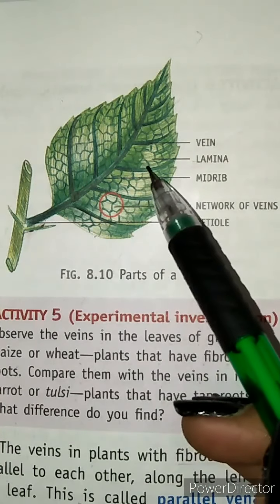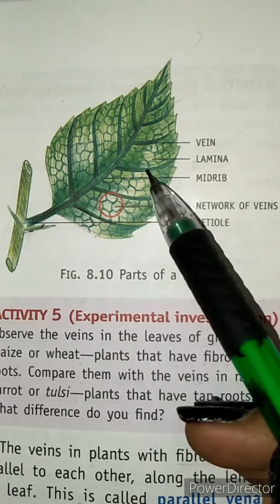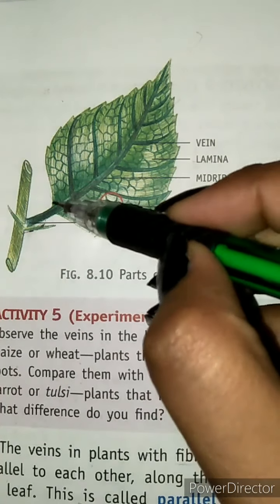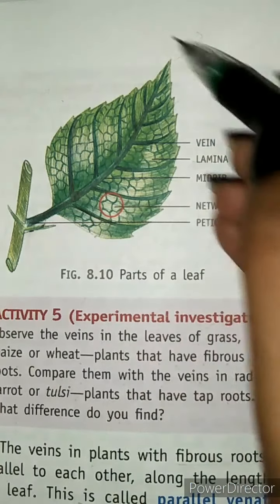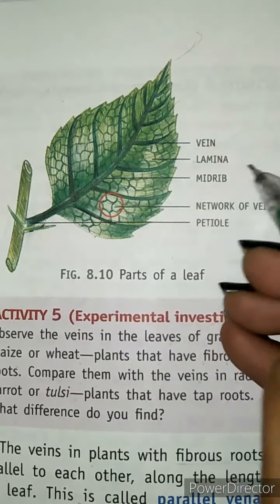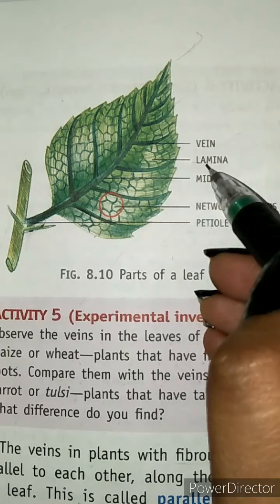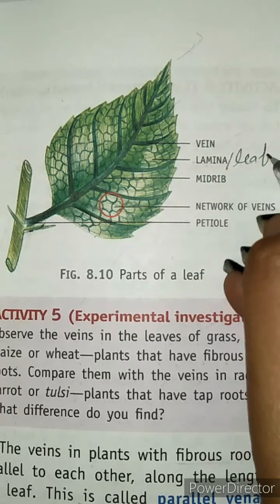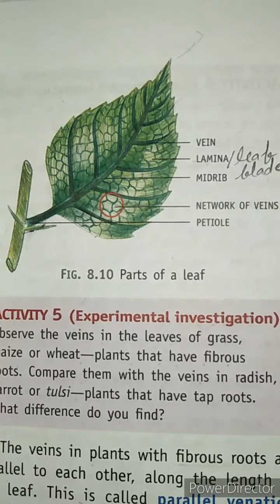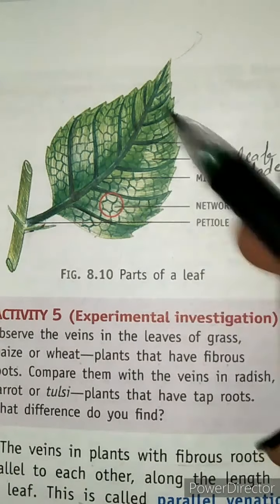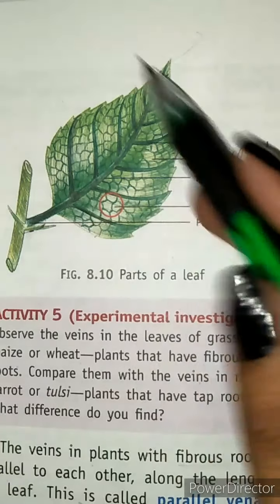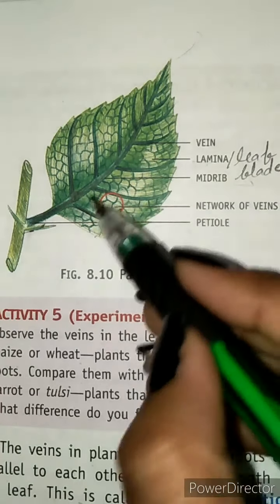The flat green portion of a leaf is called lamina or leaf blade. This whole flat area is known as lamina. Another name for this is leaf blade. This is the main part of the leaf.